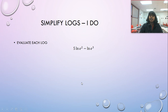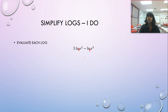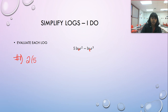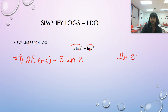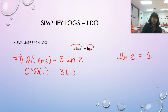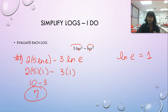Moving forward, let's evaluate the next one. This one seems scary, but we should remember that the natural base of the natural log is e. So we drag the two and the three forward as coefficients using the power rule. We know that the natural log of e equals one. This becomes two times five times one minus three times one, which is 10 minus three, equaling seven. Plugging this into a calculator also gives seven.